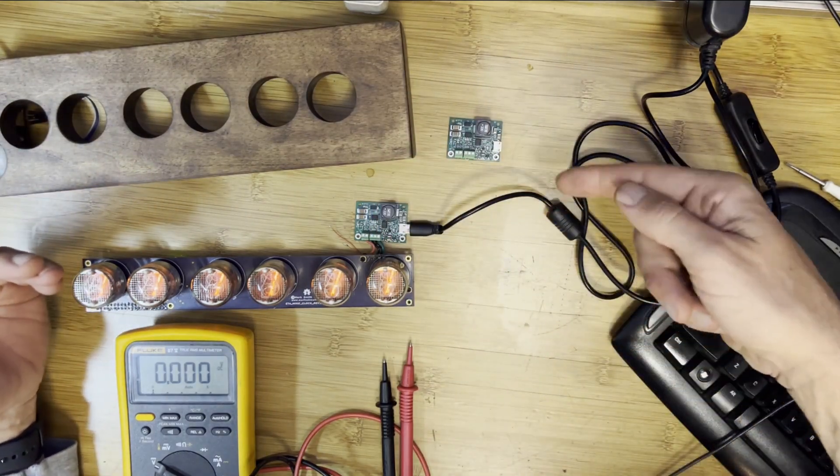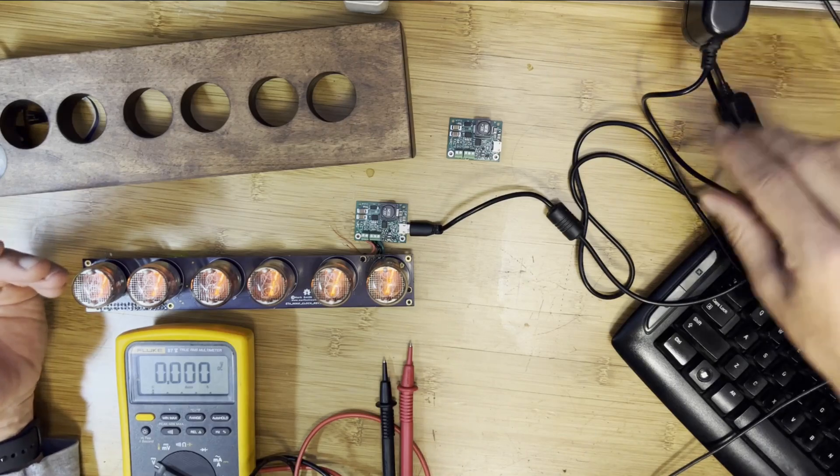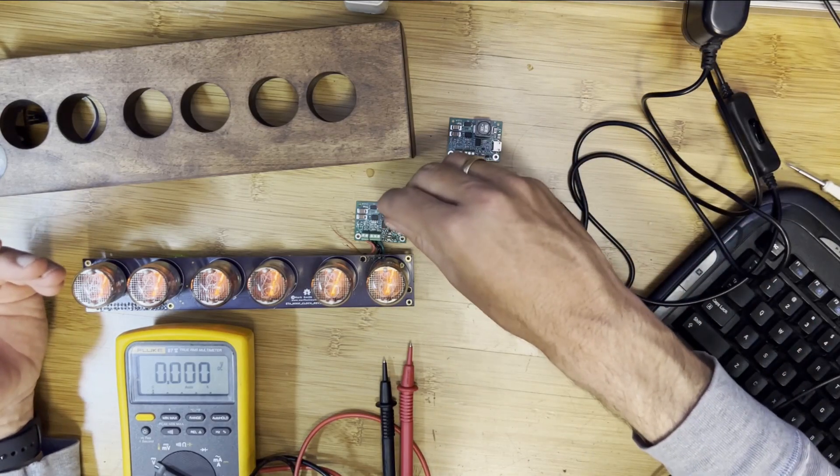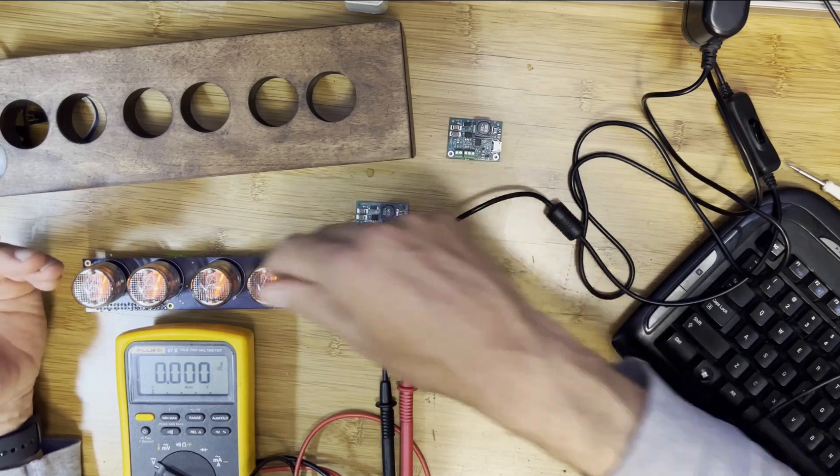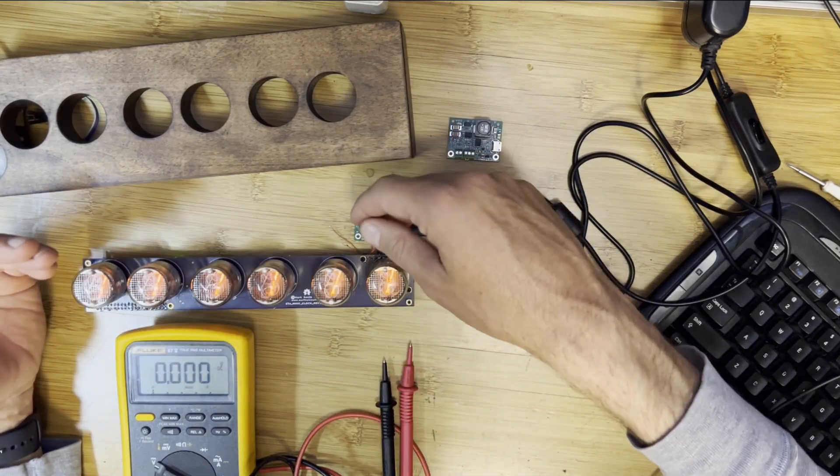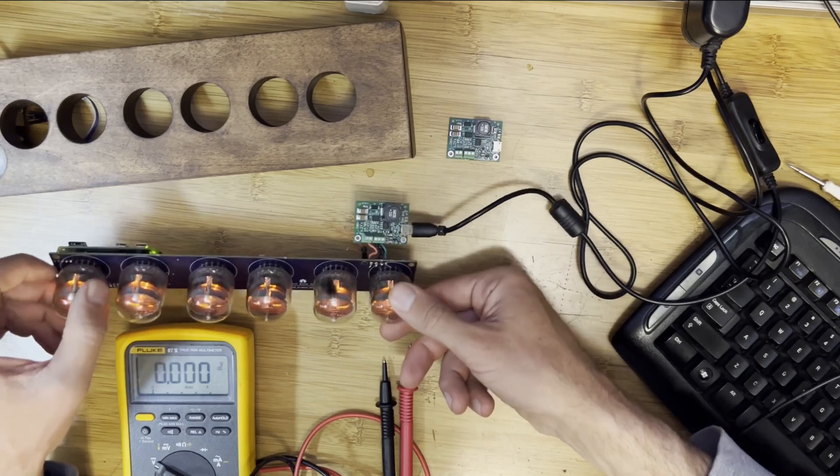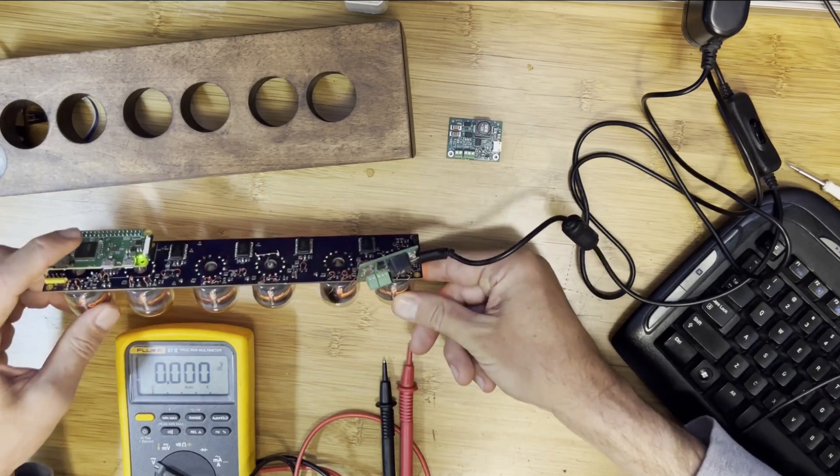But in this case, you can see I have a 2.5 amp power supply that's coming in here and powering the Nixie tube power supply. And that power supply is outputting 165 volts for the Nixie tubes, but it's also outputting 5 volts for our Raspberry Pi Zero, which is right over there.